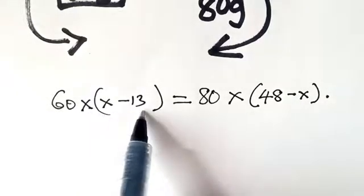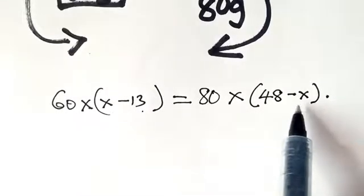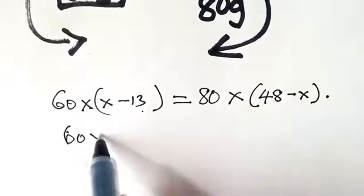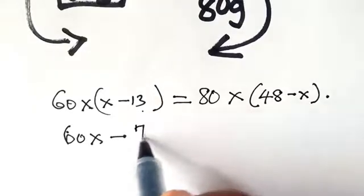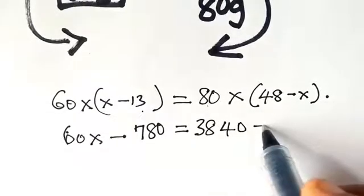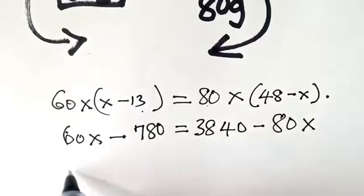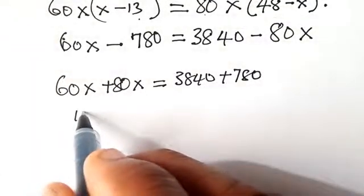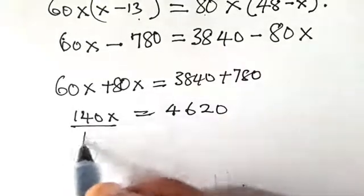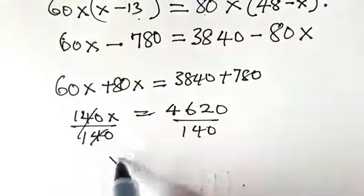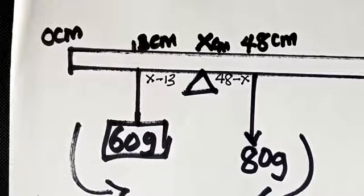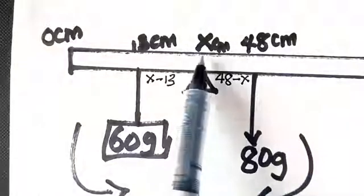About this same point, 60 times x minus 13 is equal to 80 times 48 minus x. Remember, this x minus 13 is the distance from point x to 60 grams, while this 48 minus x is the distance between 48 cm mark to the balance point. 60x minus 780 equals 3840 minus 80x. This is 140x equals 4620. Divide both sides by 140, so I have that x is 33 cm. The new balance point is now at 33 cm at that point x. This point x is the new balance point.